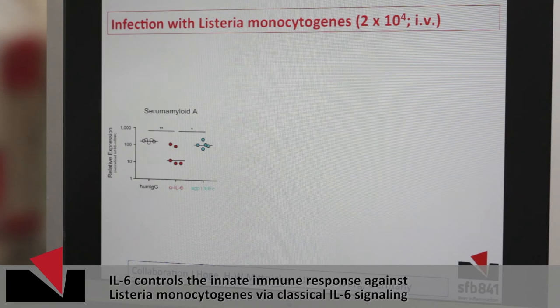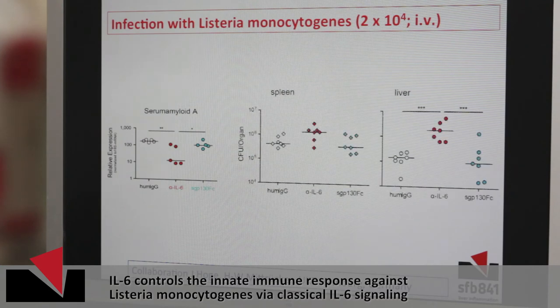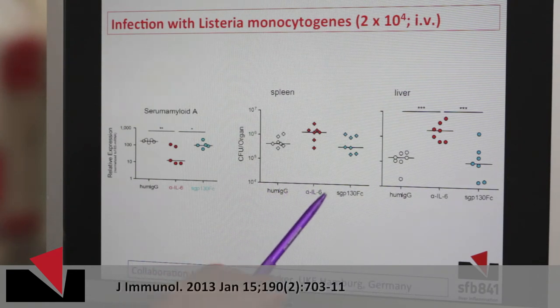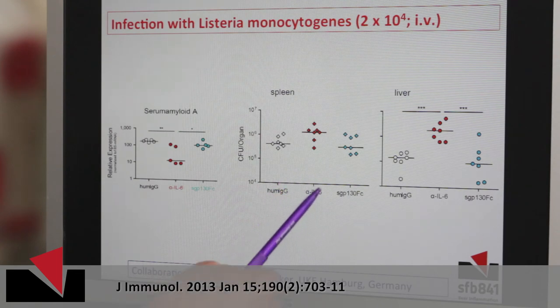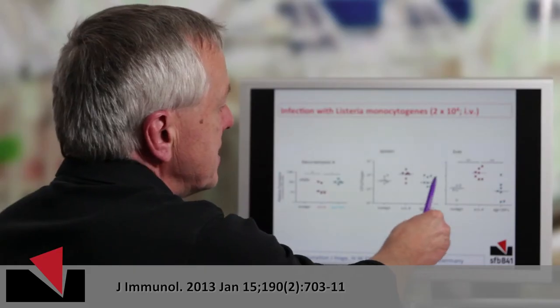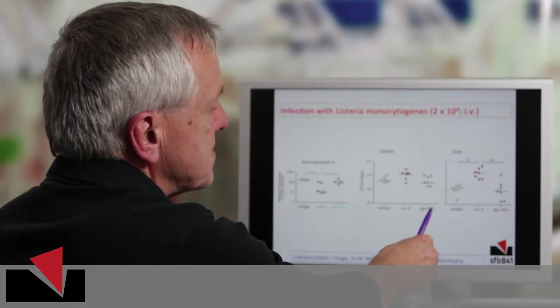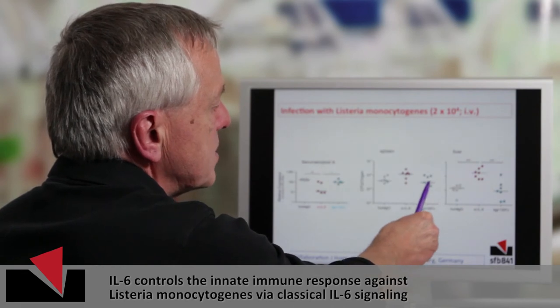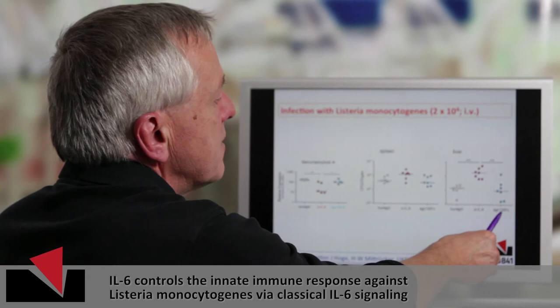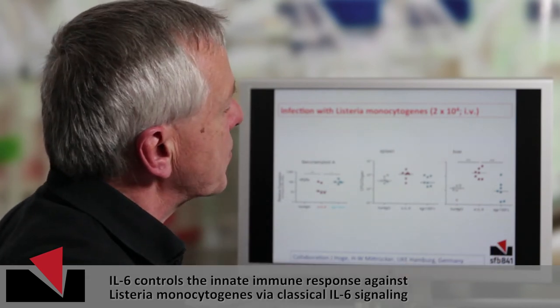When you look at the bacteria you find in the spleen and in the liver, you can clearly see the treatment with the neutralizing antibody increases the bacteria in spleen and in liver quite tremendously, whereas the bacteria after treatment with soluble GP130-FC protein remain the same or have a tendency to go down when you treat with soluble GP130-FC.